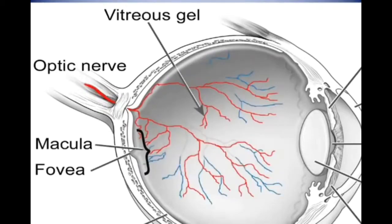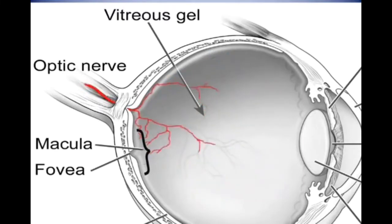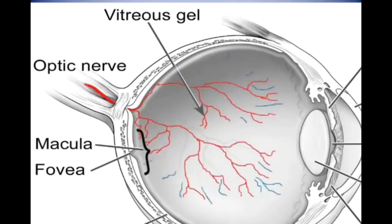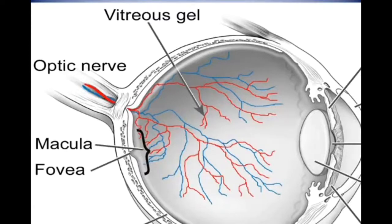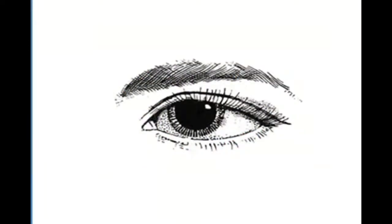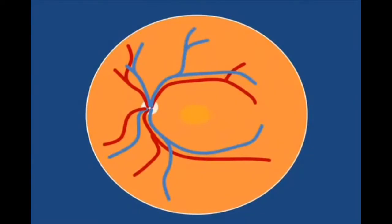After the blood has made its way through the capillaries and delivered its nutrients and oxygen to the surface layers of the retina, the blood leaves the eye through a similar system of veins. This is an illustration of the back wall of the eye, showing the major retinal vessels. The arteries are shown in red and the veins are shown in blue, emanating from the optic disc.